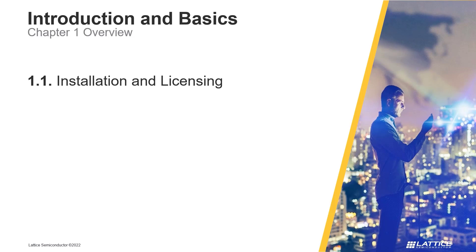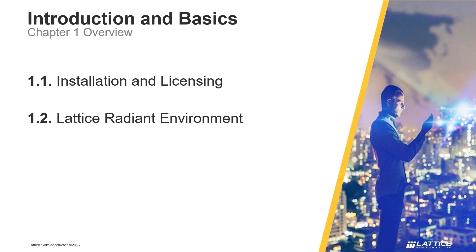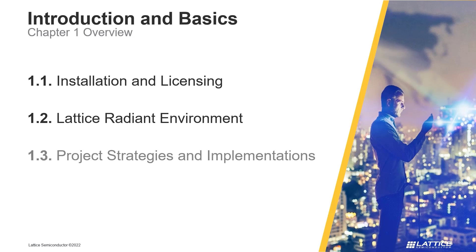In the first section of the chapter, called Installation and Licensing, the general process for downloading Radiant and requesting a license are covered. In section 2, Lattice Radiant Environment, we will introduce Radiant's workspace environment and what it can be used for. Finally, in the third section, Project Strategies and Implementations, we will review the basics for Radiant's project strategies and project implementations.